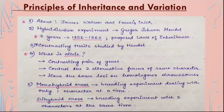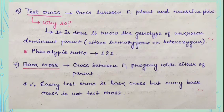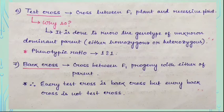A monohybrid cross is a breeding experiment dealing with only one character at a time, while a dihybrid cross involves two characters at the same time. A test cross is the cross between an F1 plant and the recessive plant — it is done to determine the genotype of the unknown dominant parent, either homozygous or heterozygous. The phenotypic ratio of the monohybrid test cross is 1:1. A back cross is a cross between F1 progeny and either parent — every test cross is a back cross, but every back cross is not a test cross.